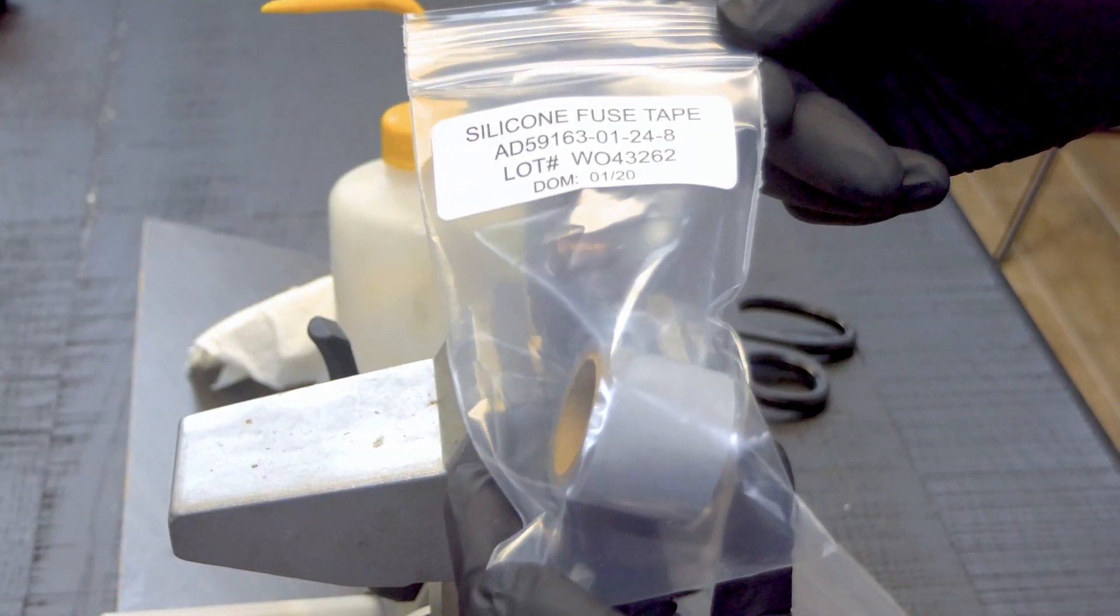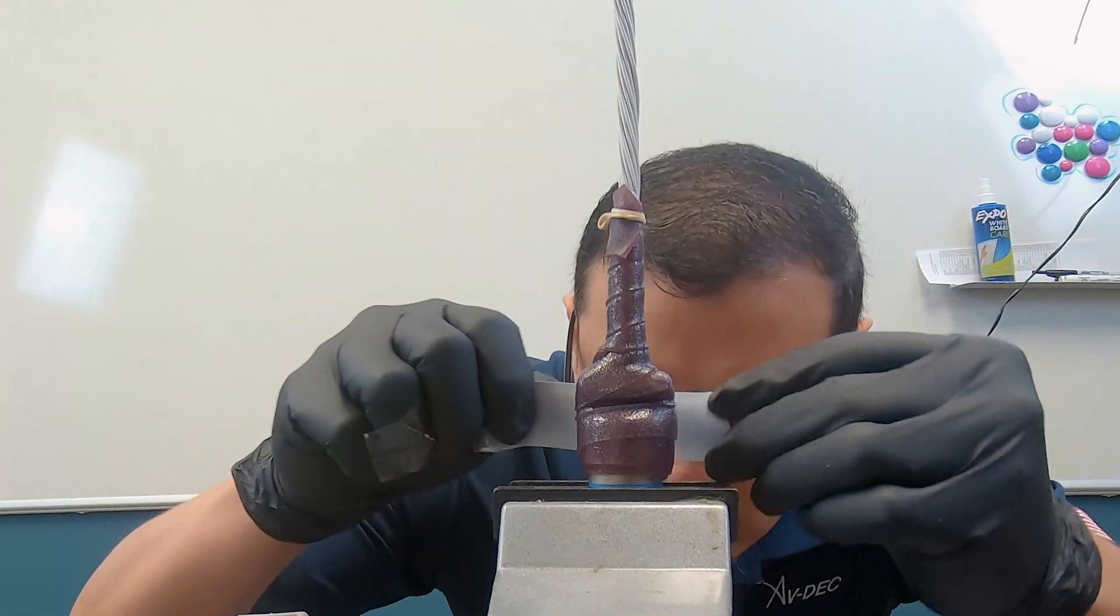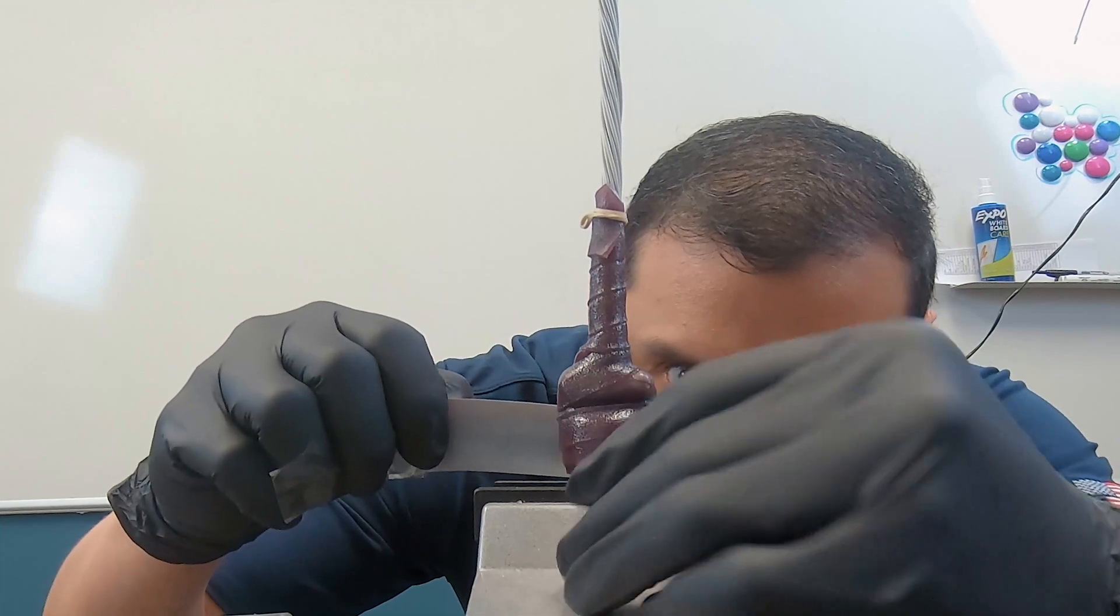Using the self-fusing silicone tape, begin to wrap the connector behind the coupling ring with one complete revolution on itself. After the first full wrap is complete, continue wrapping with a 50% overlap over the top of the stretch seal tape.